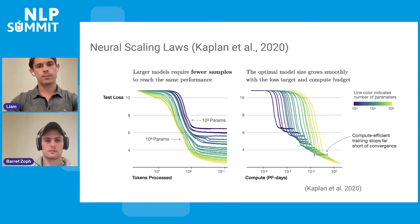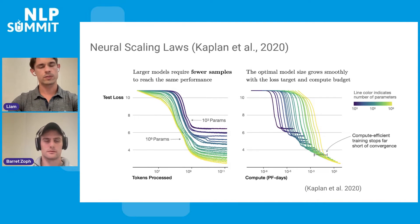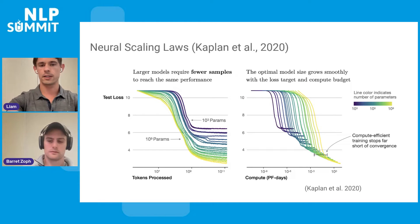Interestingly, larger models have other benefits as well. Larger models require fewer samples to reach the same performance, and with the compute budget, the optimal model size actually grows smoothly. However, these models can be extremely expensive, and sparsity is one of the most promising areas for increasing the scale without increasing the cost.